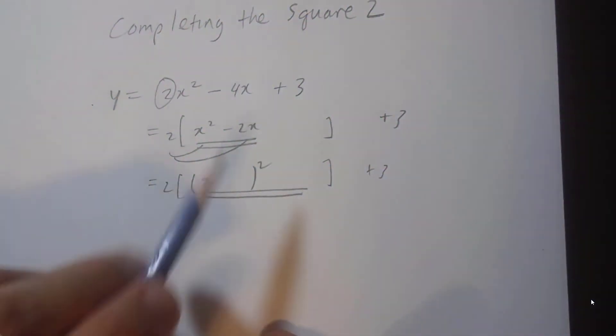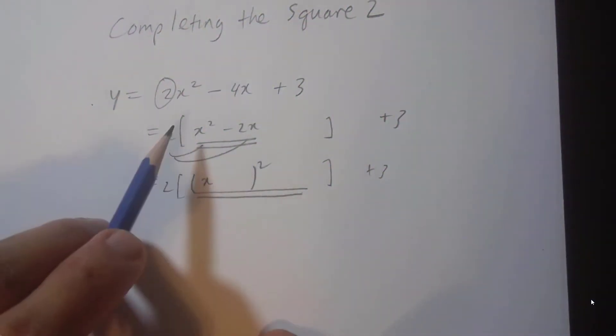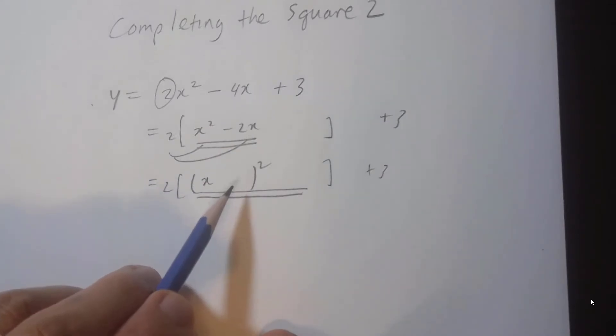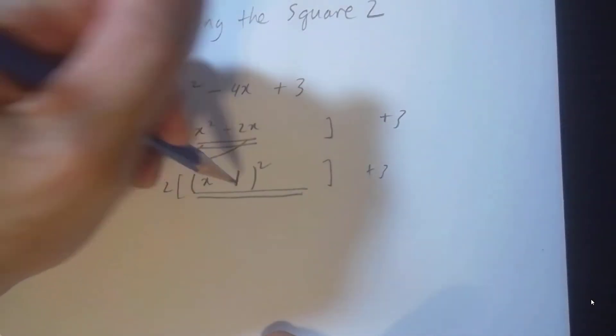Yes, it's going to be x because x times x is x squared. Now, do we copy down the negative 2 here or a half? It's going to be half, which is minus 1.